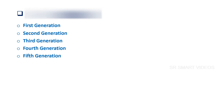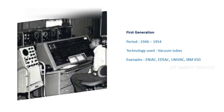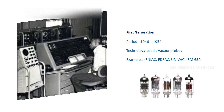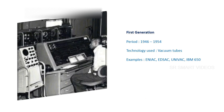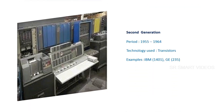Let's start with the first generation. The first generation period is considered from 1946 to 1954. The main technology used in computers was vacuum tubes. Some examples of first generation computers are ENIAC, UNIVAC, and IBM 650.